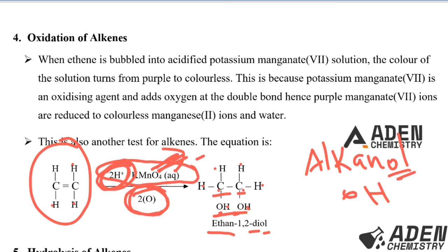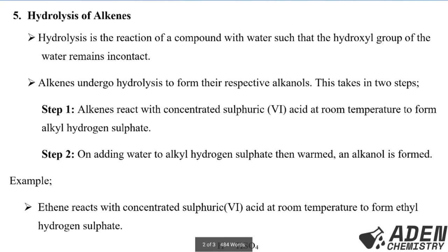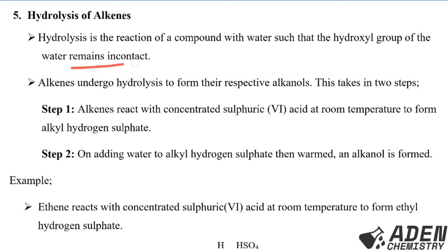Next, we go to the fifth chemical property of alkenes, which is hydrolysis of alkenes. Hydrolysis is a reaction of a compound with water such that the hydrogen group of the water remains in contact. Alkenes undergo hydrolysis to form their respective alkanols. This reaction takes place in two steps. In the first step, the alkene reacts with concentrated sulfuric acid at room temperature to form alkyl hydrogen sulfate.